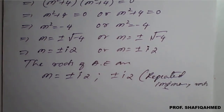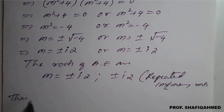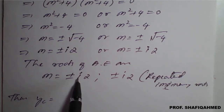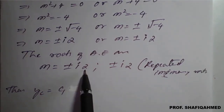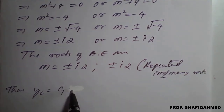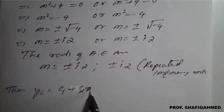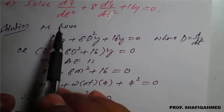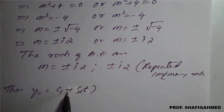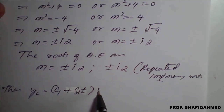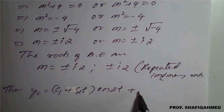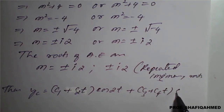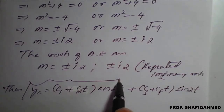Therefore, to write the complementary function: since the complex roots are the same and the imaginary part is also the same, we use the repeated-root form. The complementary function yc equals (c₁ + c₂t)cos(2t) plus (c₃ + c₄t)sin(2t). Note that t appears here because the equation is with respect to t, not x.